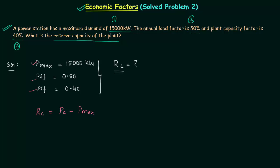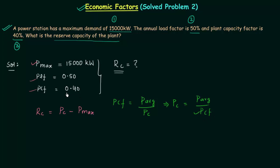Plant capacity factor is equal to average power over the plant capacity. From here we can say plant capacity is simply equal to average power over the plant capacity factor. We have the plant capacity factor equal to 0.40, but we don't have the average power. We will find the average power using PLF, the plant load factor.